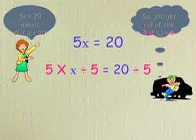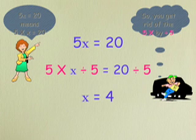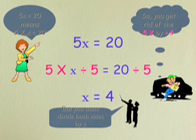The opposite of 5 times is divide by 5, so we do that to both sides. We get 20 divided by 5 equals 4, so x equals 4. So you must divide both sides by 5.